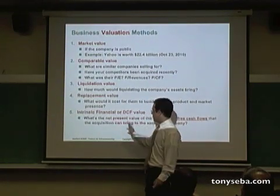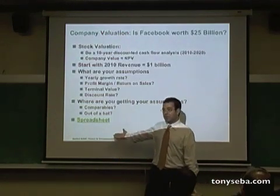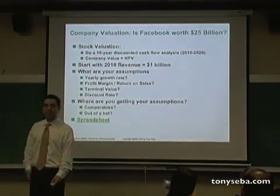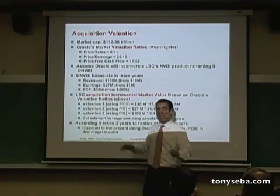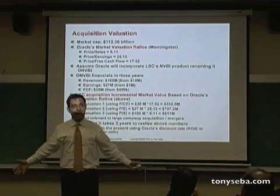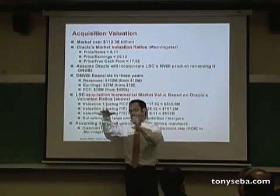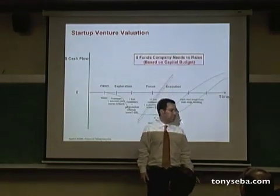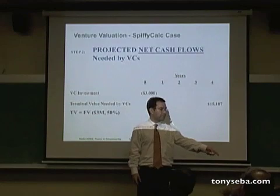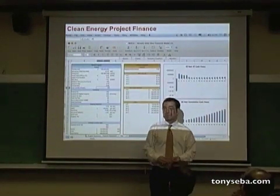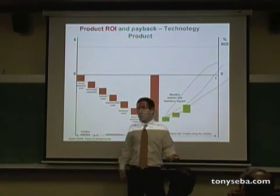We covered business valuation: comparable value, liquidation value, replacement value, and discounted cash flow value. We did the exercise of whether Facebook is worth $25 billion. Then we put it all together for acquisition valuation — using ratios and discounted cash flow — as well as venture valuation from the VC point of view, a clean energy project with a guest speaker, and today we did product ROI.